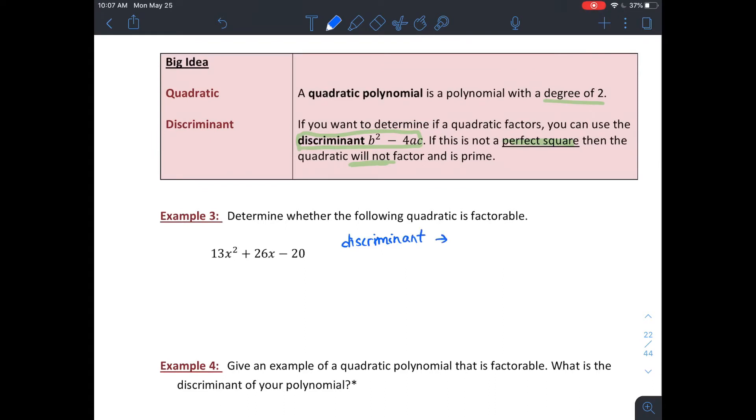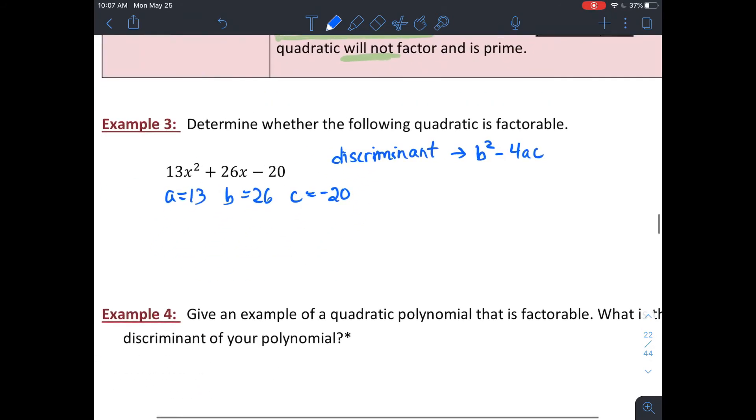So let's try one. The discriminant, if I look at my values for a, b, and c, a is 13, b is 26, c is negative 20. So if I do 26 squared minus 4 times 13 times negative 20, that'll get you 1,716. If you try the square root of it, you can punch in a calculator, you can break it down. It's gonna be 2 square root 429, or some funky decimal. It's not a perfect square.